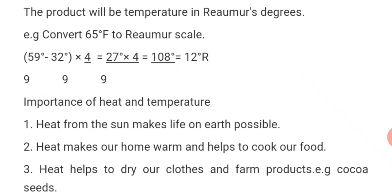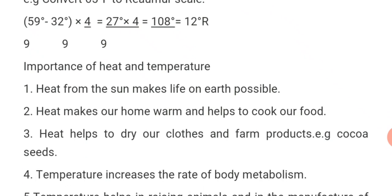First, heat from the sun makes life on earth possible. Human beings need heat for life activities. Plants also receive heat from the sun, which produces photosynthesis, giving us food from plants. Second, heat makes our homes warm and helps to cook our food — with warmth during cold periods and heat supplied by fire or electric sources for cooking.